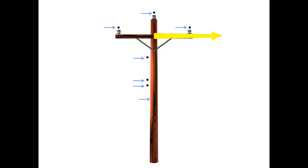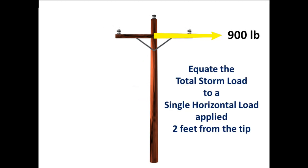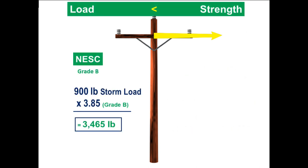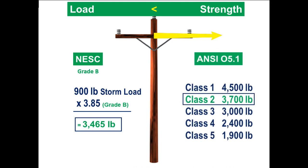To combine all aspects: consider a pole with multiple attachments where wind load equates to a 900-pound force two feet from the top of the pole. For Grade B construction, multiply 900 pounds by the combined safety factor of 3.85, giving 3,465 pounds — requiring a Class 2 pole per the ANSI class loads table. For Grade C, the factor of 2.06 gives 1,854 pounds, and a Class 5 pole will support that load.